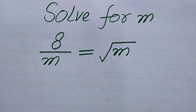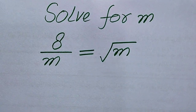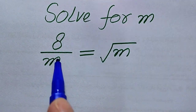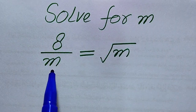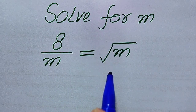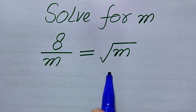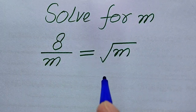Hello everyone. How to solve this problem for the values of m, if we have 8 divided by m equals square root of m? We solve this problem for all the values of m.